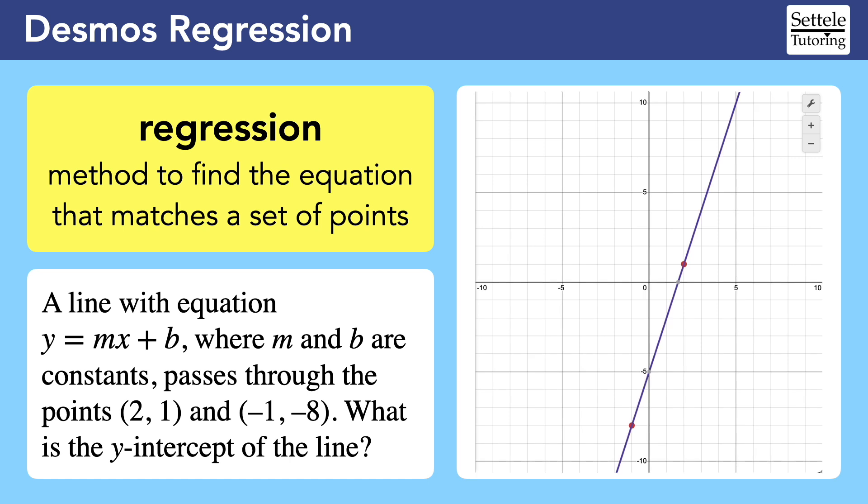Desmos will tell us the values of m and b, which allows us to see the entire equation of the line.